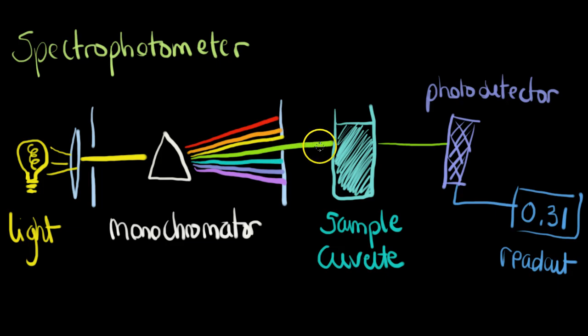This green part of the light is going to come through and hit our sample here, sample cuvette. The sample cuvette has sample in it at a set concentration. Some of this light is going to be absorbed by the sample and the rest of it is going to be transmitted onto the photodetector.